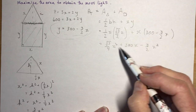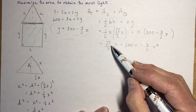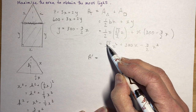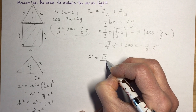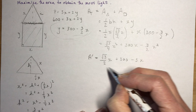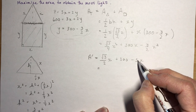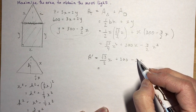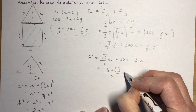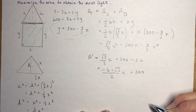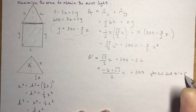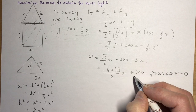Now take the derivative. The derivative of (√3/4)x² is (√3/2)x. The derivative of 300x is 300. The derivative of −(3/2)x² is −3x. So A′ = (√3/2)x + 300 − 3x. Combining the x terms: A′ = (−6/2 + √3/2)x + 300 = (−6 + √3)/2 · x + 300.